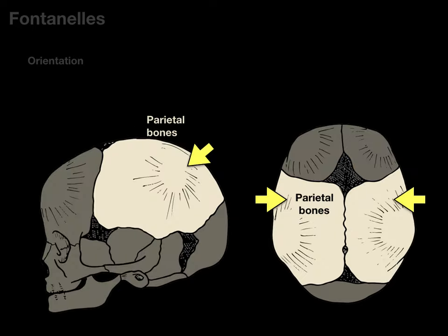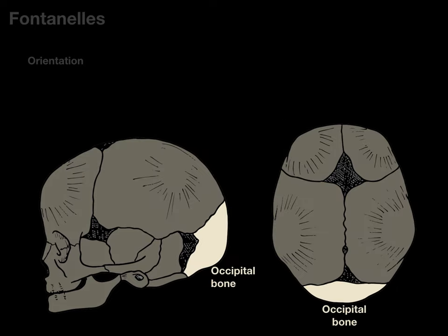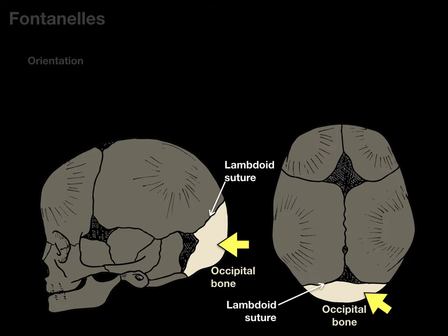The parietal bones form the superior wall of the calvarium or skull. The coronal suture borders the front of the parietal bones, and the sagittal suture goes right down the middle of the two parietal bones. The occipital bone forms the back of the skull — the part that you would rest against a pillow — and it's bordered anteriorly by the lambdoid suture.